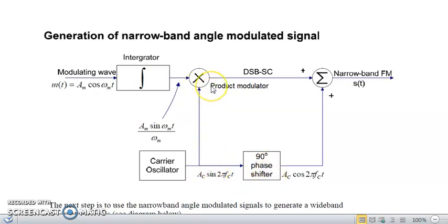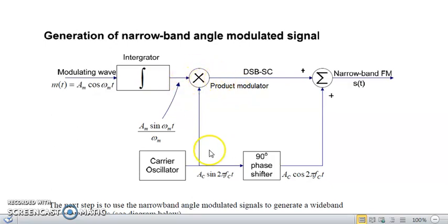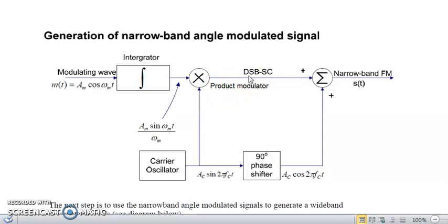As we have seen in AM generation, if the carrier signal and baseband signal are fed to the product modulator, we receive a double sideband suppressed carrier signal — the upper sideband at FC + FM and the lower sideband at FC − FM. We do not get the carrier signal here, which is why it is called suppressed carrier (SC).